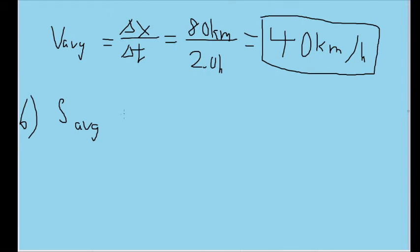Part B asks us to find the average speed of the automobile's motion. Remember that velocity takes into account the direction of motion, while speed does not. Because we are only dealing with one-dimensional motion here — since the automobile is on a straight road — we don't have to worry about different components of the car's vector motion. All we have to do is make sure there are no negative signs, which there aren't. So the average speed is just 40 kilometers per hour.